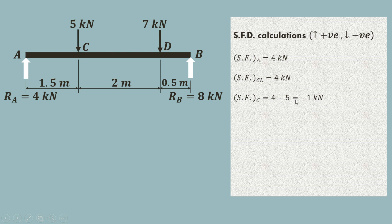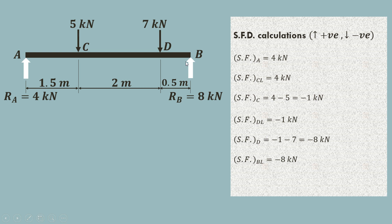Exactly at C there is a 5 kN downward point load, so shear force at C equals 4 minus 5, which is minus 1 kN. Between C and just left of D there is no other force, so it remains minus 1 kN. At point D there is a 7 kN downward force, so it becomes minus 1 minus 7, that is minus 8 kN. Shear force at B-left is also minus 8 kN, and exactly at B the upward reaction of 8 kN brings it to minus 8 plus 8 equals 0 kN.